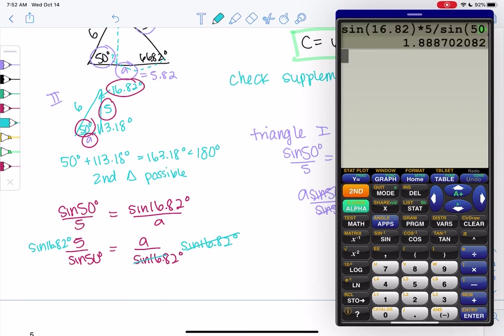Sine of 16.82 times 5 divided by sine of 50. And A is only 1.88 on this triangle. Makes sense. It should be smaller. 1.89.